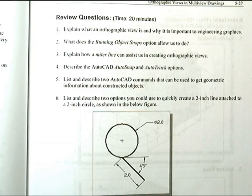Number two: What does the running object snaps option allow us to do? The running object snaps option sets object snaps active until we turn them off. The running object snaps option allows you to actively control the placing of the cursor to points on existing objects such as endpoints, midpoints, centers, and intersections, to name a few.